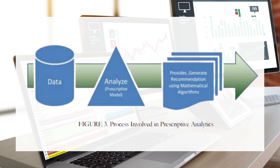For the first process, we need data to be collected. A data repository is needed to access essential data. For the analysis of data — the second process — we need to analyze the data we collected, using a data model to assess and query the collected data.